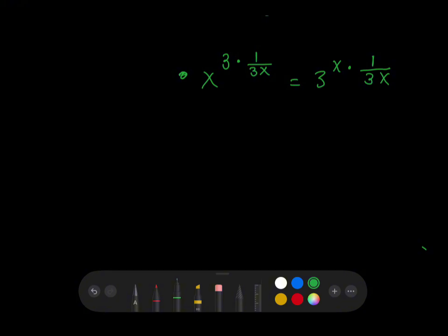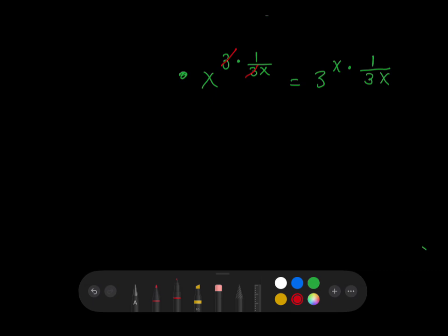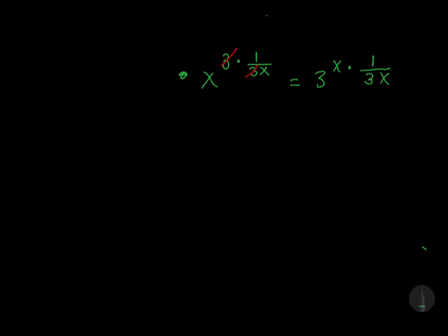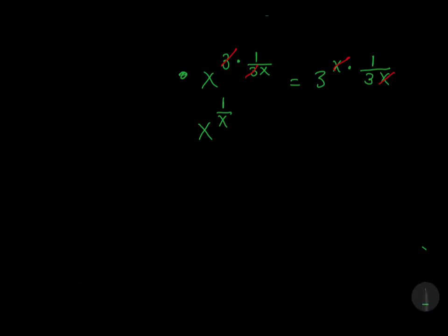Therefore, from here, it's obvious that 3 and 3 will cancel each other. So we'll have x to the power of 1 over x. And x will cancel with x, so we'll have 3 to the power of 1 over 3.